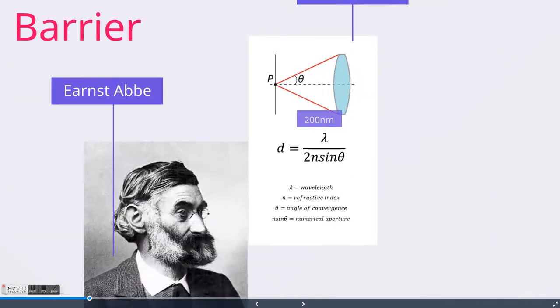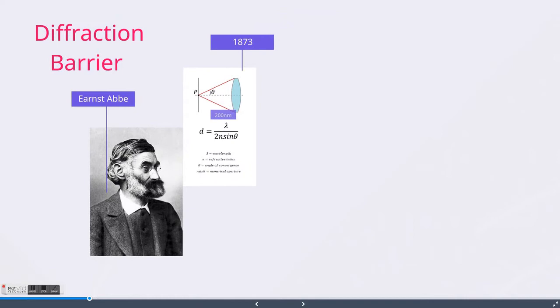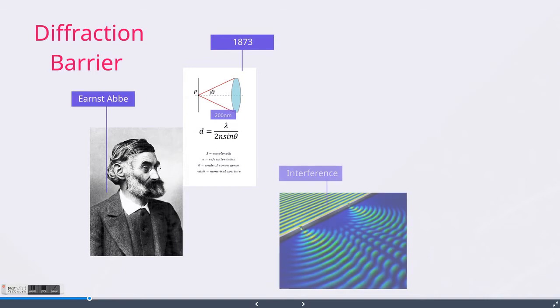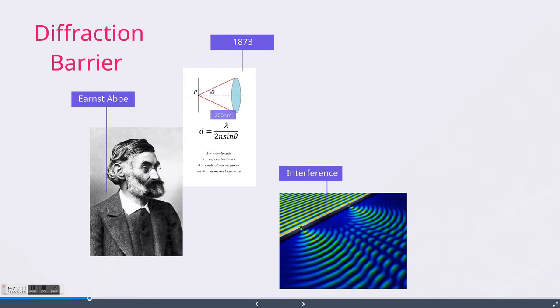That means that any two objects within 200 nanometers of each other are indistinguishable. In modern microscopes, light passes through the aperture and then refracts, causing interference and then blurriness.